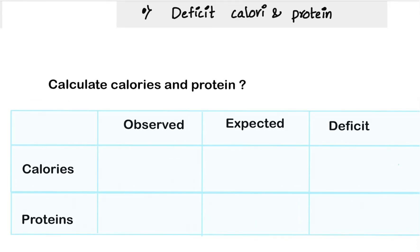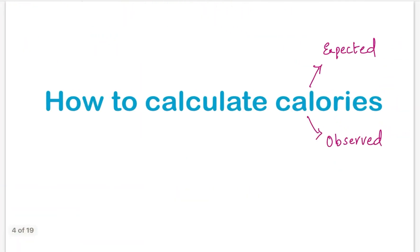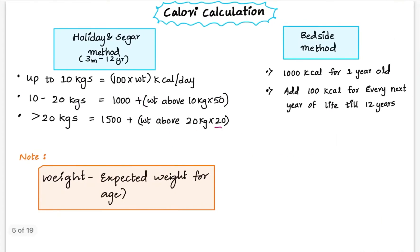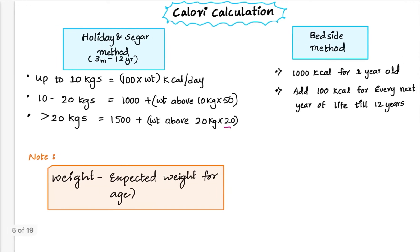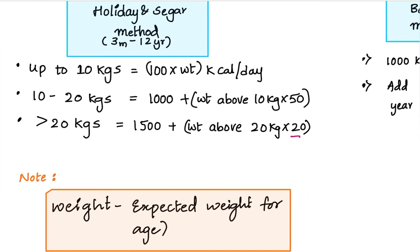Now we will learn how to calculate calories, both expected and observed. Observed calories are what the child is consuming in a day; expected is what the child has to take in a day. For expected calorie calculation, we have two methods. The first is the Holliday-Segar method, used for children between 3 months to 12 years. For weight up to 10 kg: 100 kcal per kg per day. For weight between 10 to 20 kg: 50 kcal per kg per day. For more than 20 kg: 20 kcal per kg per day for each additional kg.